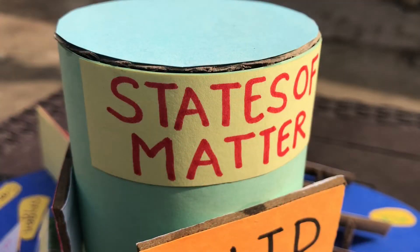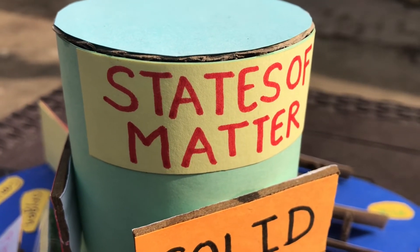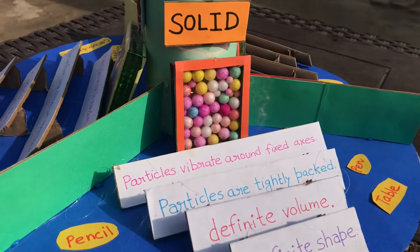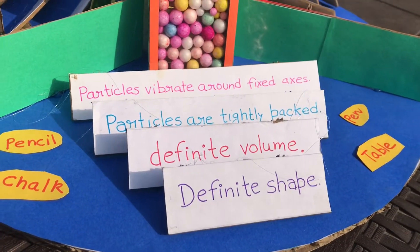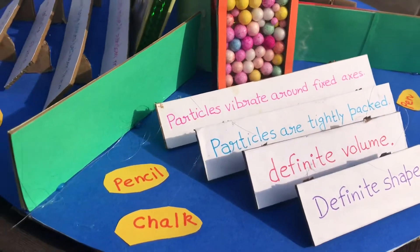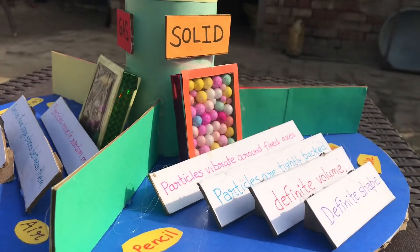Hello friends, today I am going to discuss the new model that is states of matter. This is a science project and we have the three states of matter. The first one is the solid state. In the model, you can see that the particles of the solid state are tightly packed, and we have definite shape and definite volume.